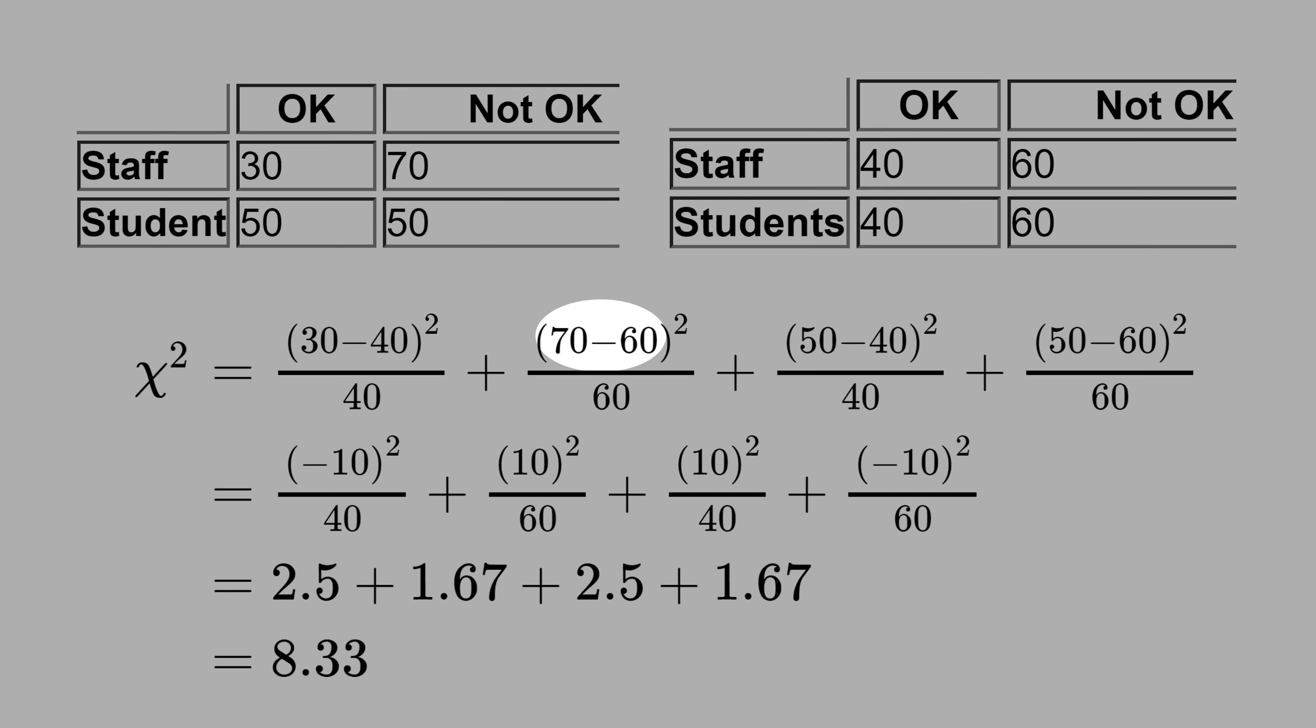In the same way, this 70 minus 60 comes from here and here, and we divide by 60. And this 50 minus 40 is this 50 and this 40, and we divide by 40. You can pause the video and see the intermediate computation, but the result is 8.33.